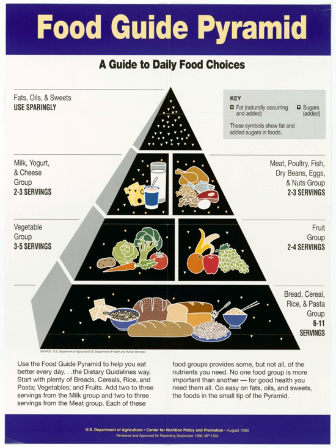Many environmental cues influence food choice and intake, although consumers may not be aware of their effects. Examples of environmental influences include portion size, serving aids, food variety, and ambient characteristics discussed below.